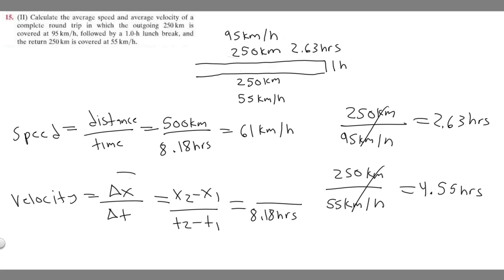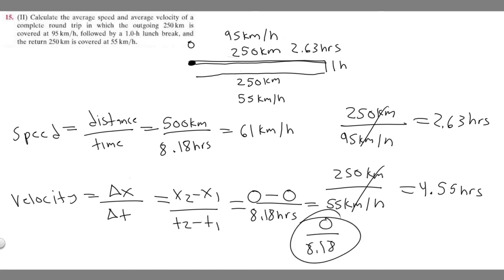Here's where they trick you: delta x means change in position. Our initial position is 0. We travel out 250 km, stop for lunch, and then travel back 250 km — so we end up in the exact same position we started. If you don't change your position, your change in position is 0. So delta x is 0 minus 0 equals 0. That gives us 0 over 8.18, which equals 0 kilometers per hour. So the average velocity is 0 km/h, and the average speed is 61 km/h.